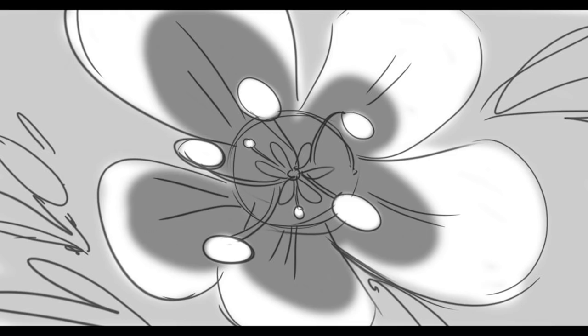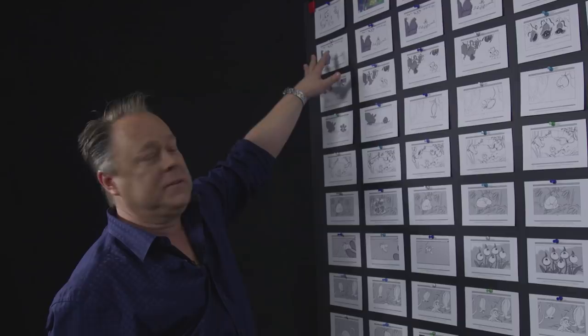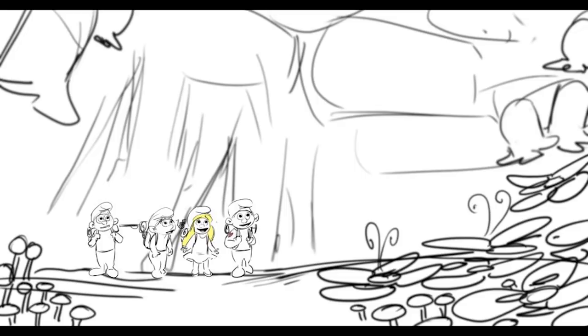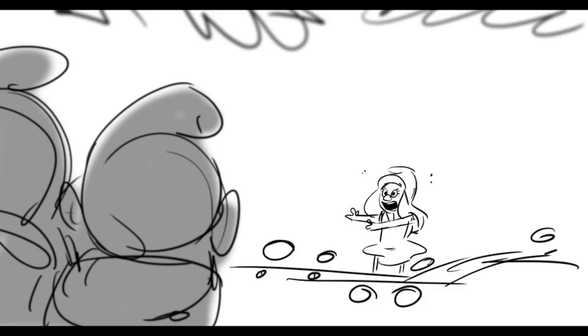So we have here Smurfette. Smurfette looks up and she sees something off screen that's amazing to her — it really lives up to its name. You see this beautiful horizon, it's so magical: the sky, the trees. We're now over the shoulder of Brainy and Hefty as they watch her walk away. She goes, wow, turns around — isn't this beautiful?